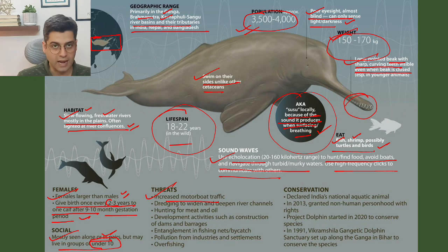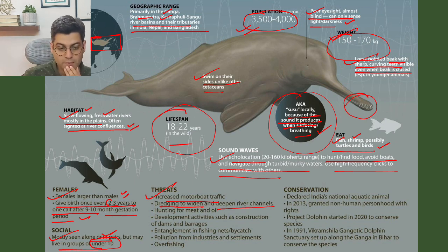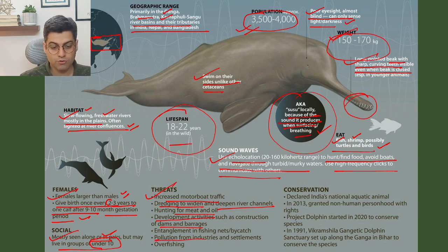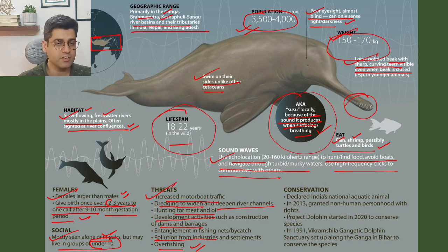Threats include increased motorboat traffic in rivers, dredging to widen and deepen river channels, hunting for meat and oil, development activities such as construction of dams and barrages, entanglement in fishing nets, pollution from industries and settlements, and overfishing — these are the major threats facing the Gangetic River Dolphin.